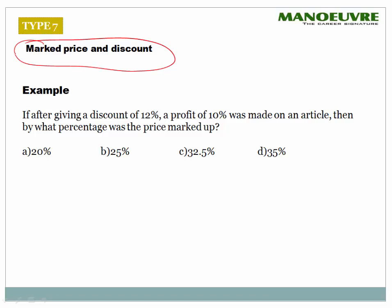Type 7: mark price and discount. If after giving a discount of 12% a profit of 10% was made on an article, what percent was the price marked up? First, we need to understand what markup is — we always mark up from the cost price.